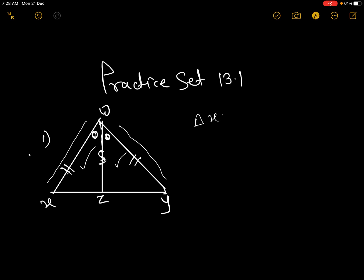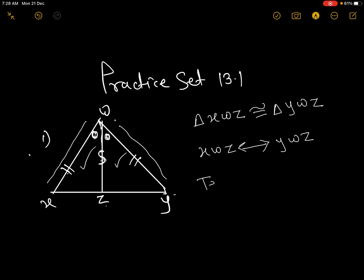Triangle XWZ is congruent to triangle YWZ. The correspondence starts from X, W, Z corresponding to Y, W, Z. So the correspondence is: XWZ corresponds to YWZ. The test is SAS — two sides and the angle included between them.